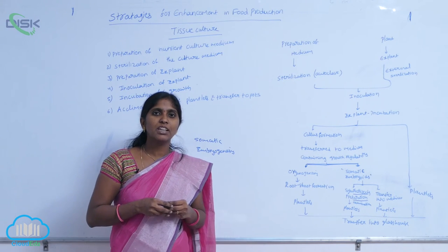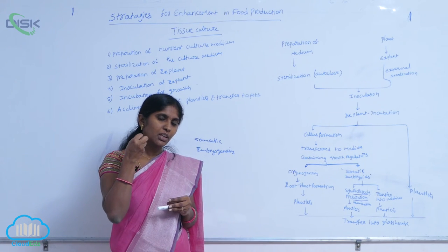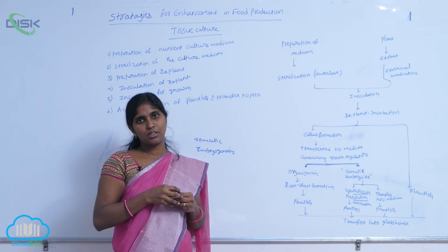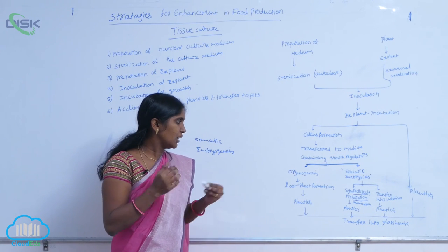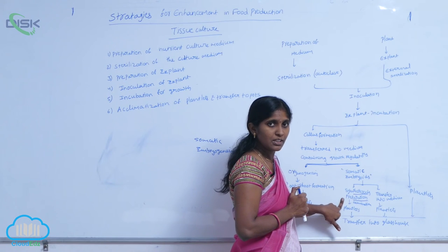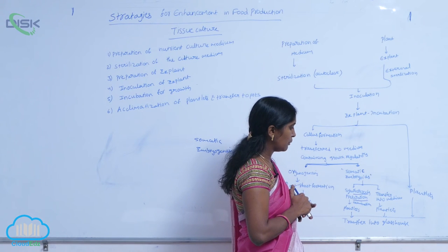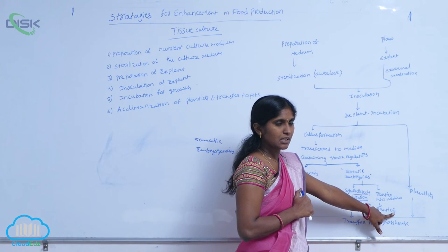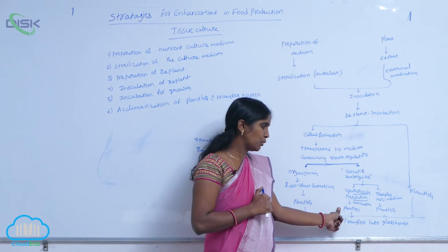Calcium pectate is a binding agent — it works as a coat. Inside the coat, the somatic embryoids are preserved. Artificially, seeds are prepared by this technique. The embryoids are preserved for further germination. Later, somatic embryoids are transferred into the medium and cultured as plantlets. The synthetic seeds also allow germination to produce the plantlets.